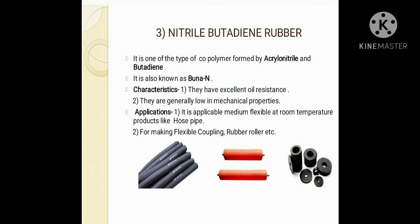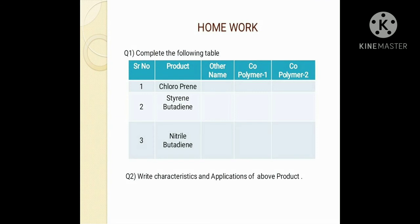I hope you have understood the three different types of synthetic rubber: BUNA-S, BUNA-N, and chloroprene. Now, there are a few homework questions. Please solve these questions in your notebook.